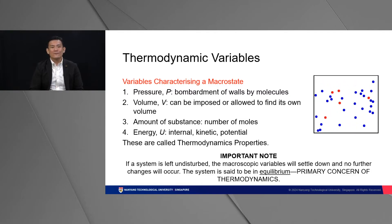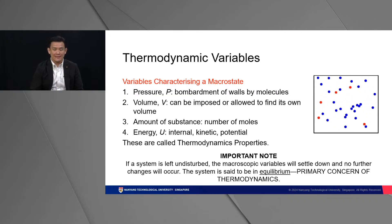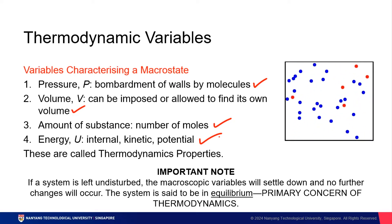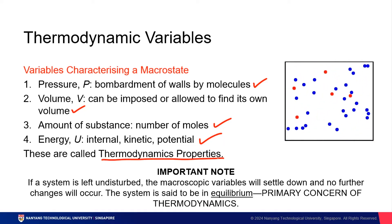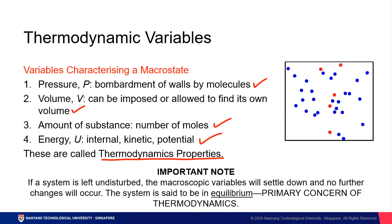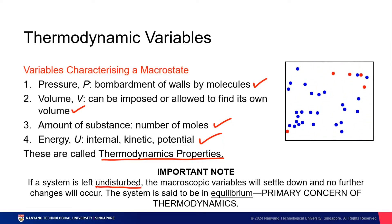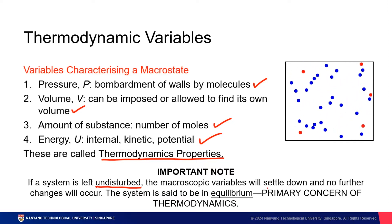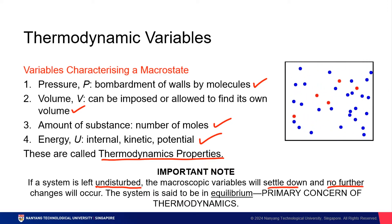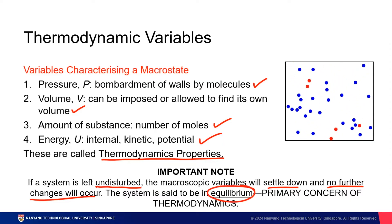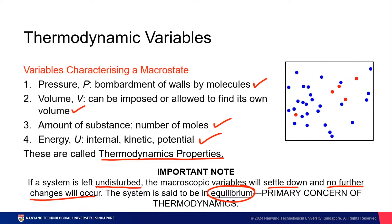What are some variables characterizing a macrostate? As mentioned, there are things like pressure, volume, amount of a substance, and energy. The macrostate variables of a system are called thermodynamic properties or thermodynamic variables. If a system is left undisturbed, macroscopic variables will eventually settle down and no further change will occur — the system is then described to be in equilibrium. This really is the primary concern of all thermodynamics. Fun fact: the universe is most likely going to end in equilibrium.